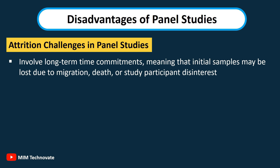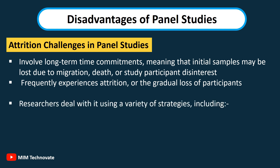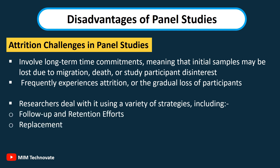A panel study frequently experiences attrition, or the gradual loss of participants. Researchers deal with it using a variety of strategies including follow-up and retention efforts, replacement, attrition analysis, and statistical methods.